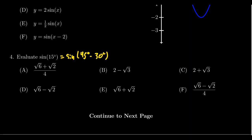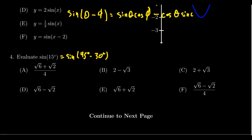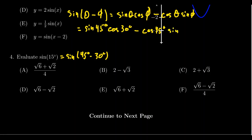Taking that approach, we can use the angle difference identity for sine. If you look on your formula sheet, you'll see that sine of theta minus phi equals sine of theta cosine of phi minus cosine of theta sine of phi. So we evaluate this as sine of 45 degrees times cosine of 30 degrees minus cosine of 45 degrees times sine of 30 degrees.